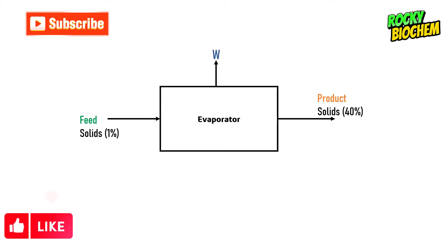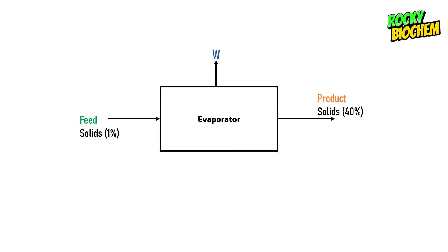In my previous video on mass balance, we learned that the evaporator system operates such that mass in is equal to mass out — the mass of anything entering the system is equal to the mass of anything exiting the system. A situation whereby this rule is violated implies something is wrong with the evaporator. Kindly check out my previous video on mass balance to enhance your understanding.